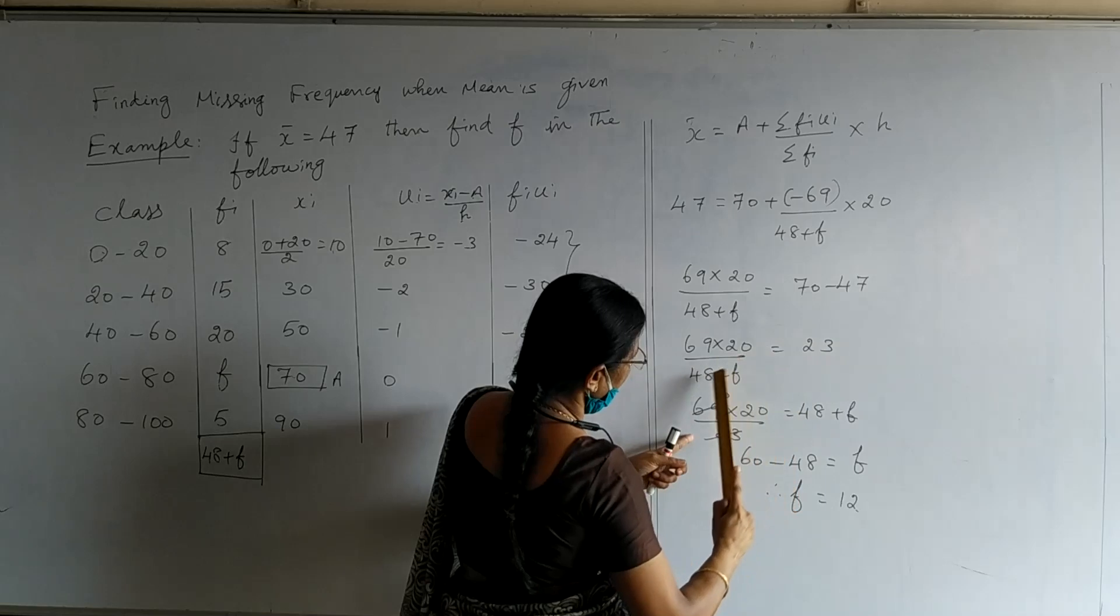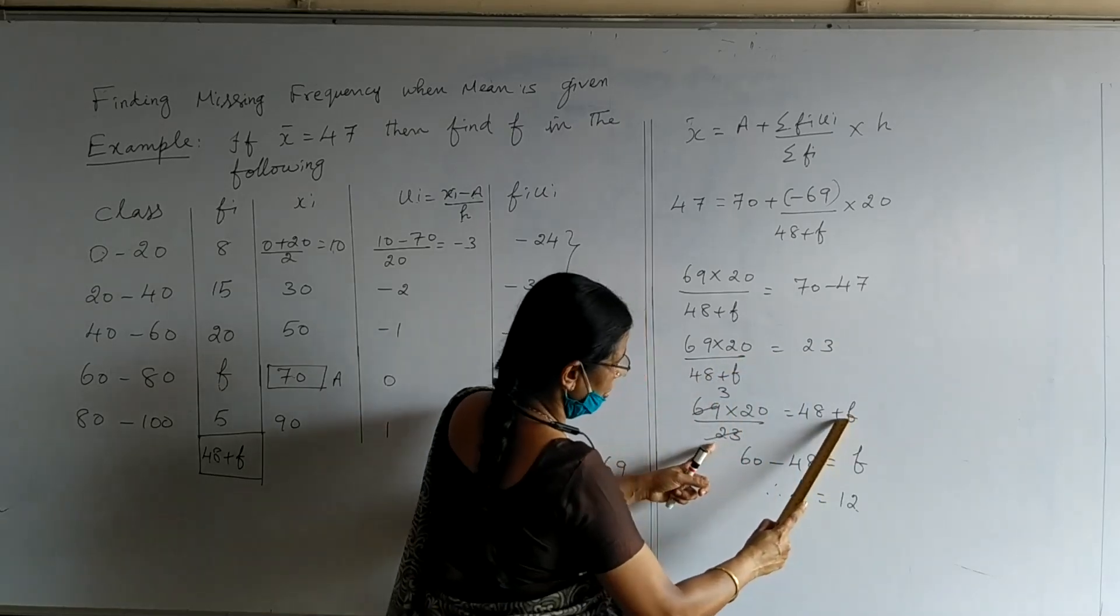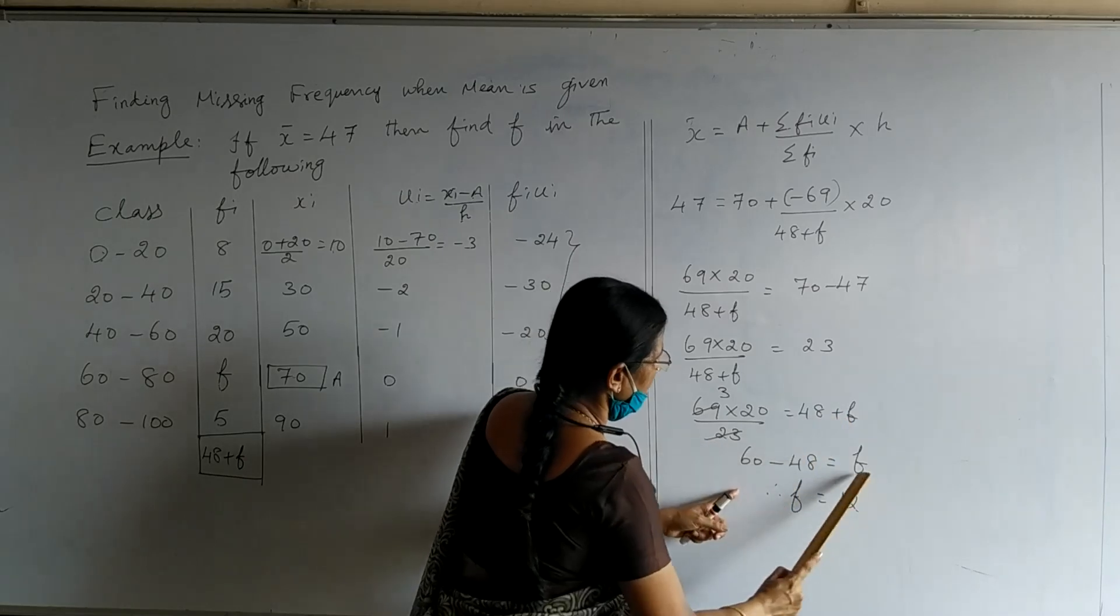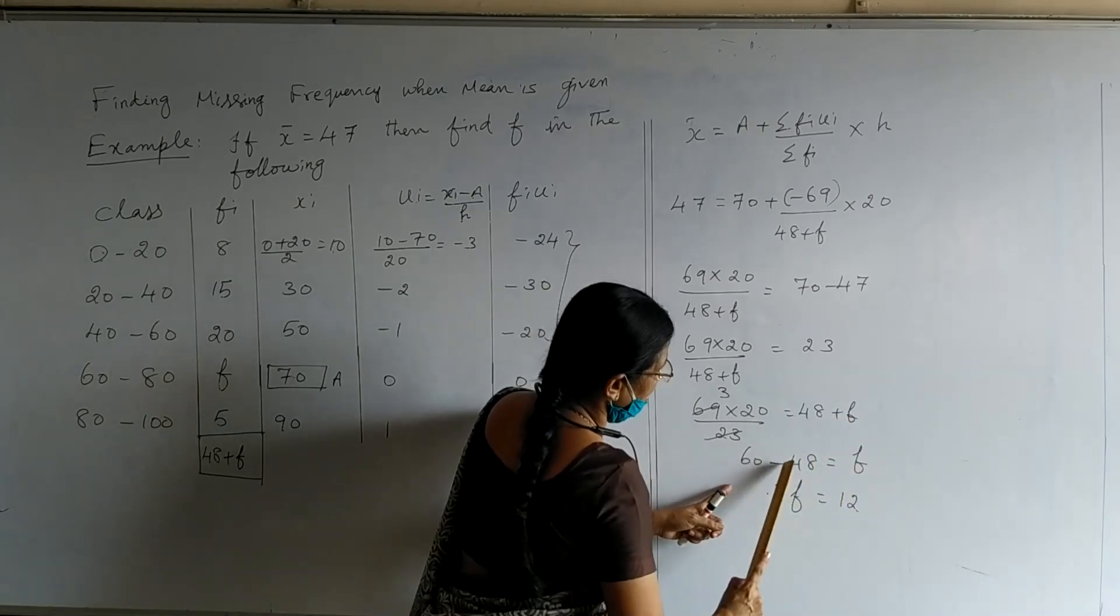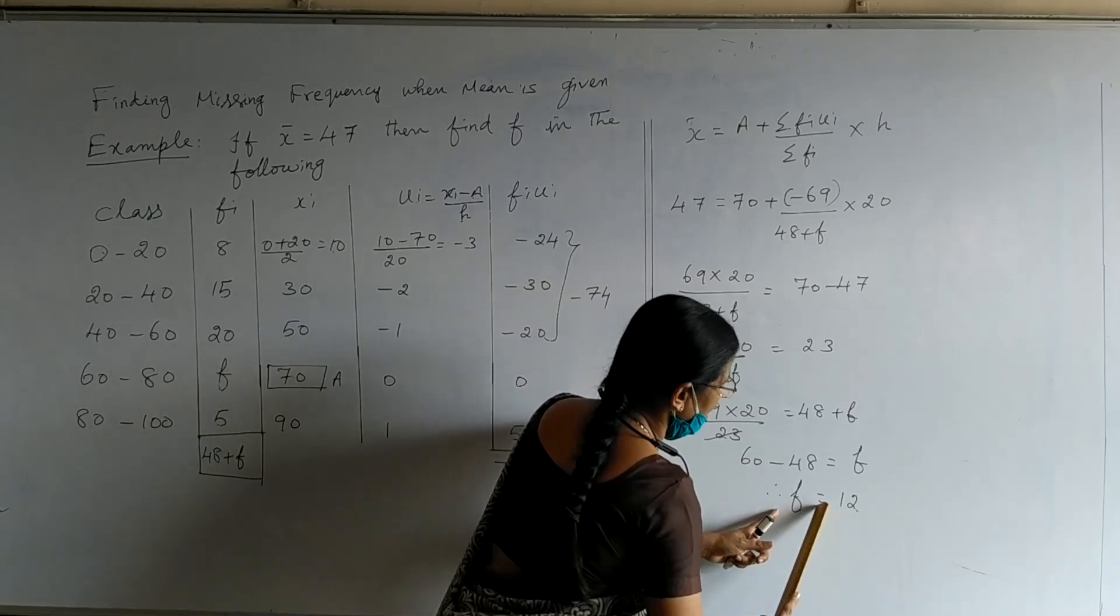Cross multiply, and 48 plus f go to the right side numerator. So solving this, we get f is equal to 60 minus 48. Therefore, the missing frequency f is 12.